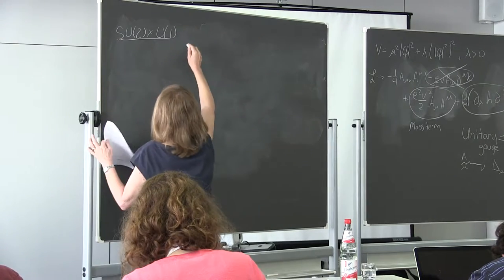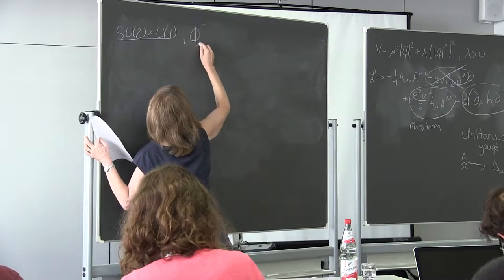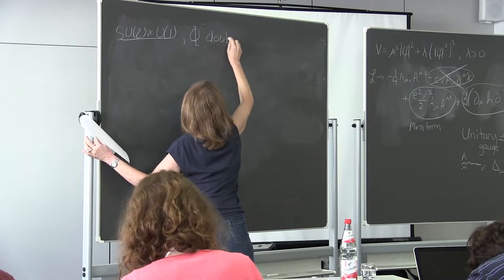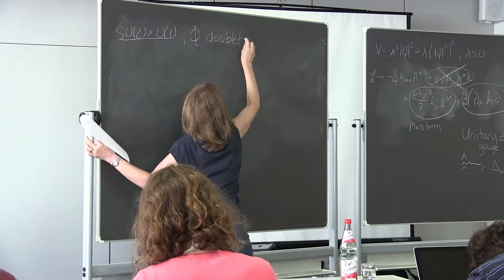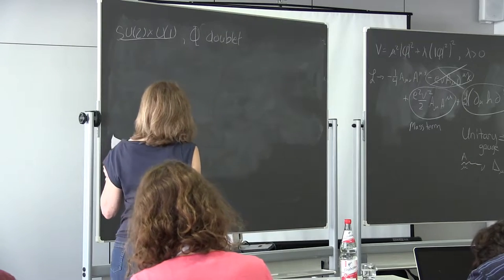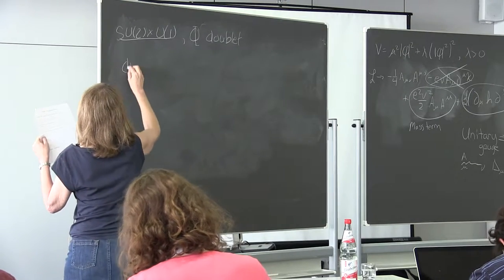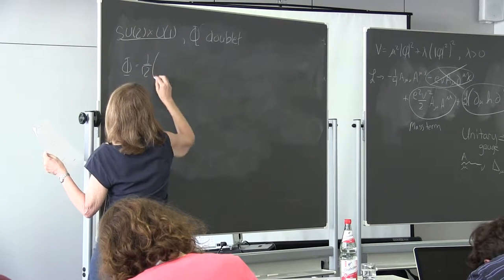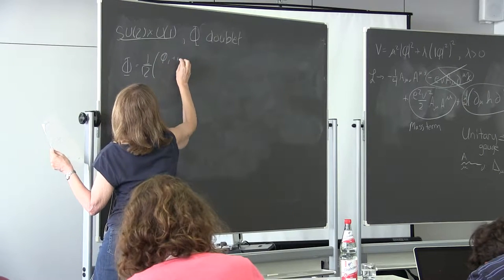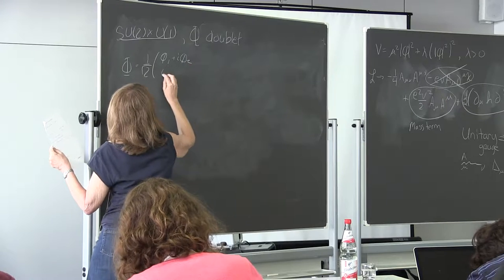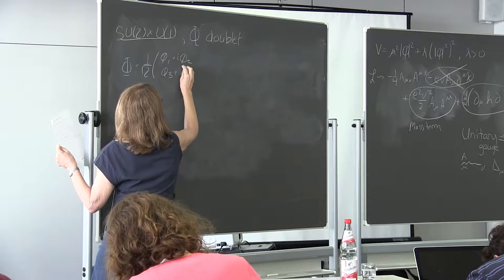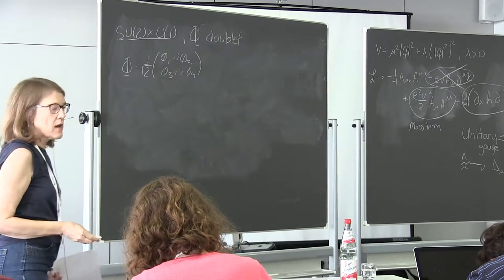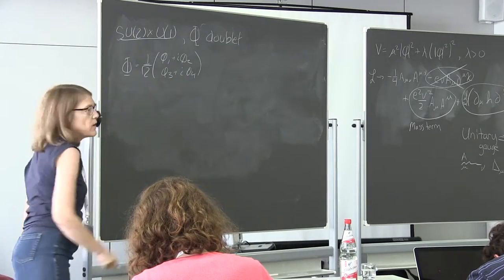In the SU(2) × U(1) theory, φ is going to be a doublet. I write φ = 1/√2 · (φ₁ + iφ₂, φ₃ + iφ₄). It's important that φ is a complex doublet, so it has four degrees of freedom.